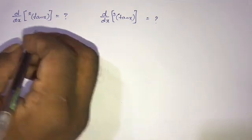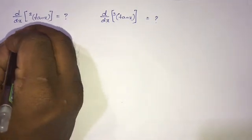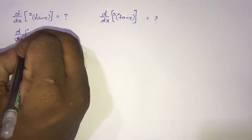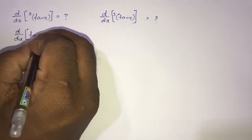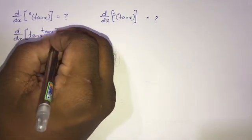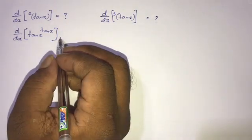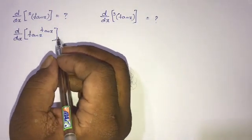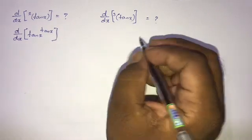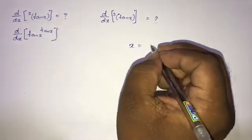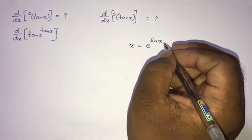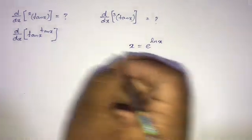Our first question: we want to find the derivative of tan x to the power of tan x. Here the base is tan x and the power is tan x. We can rewrite this using the identity x equals e to the ln of x.